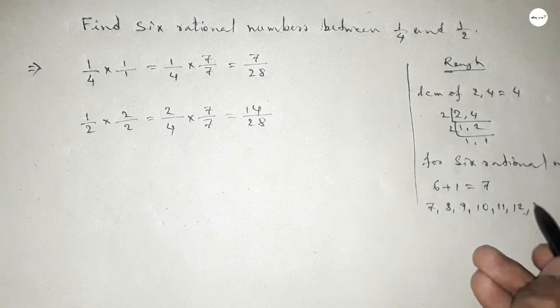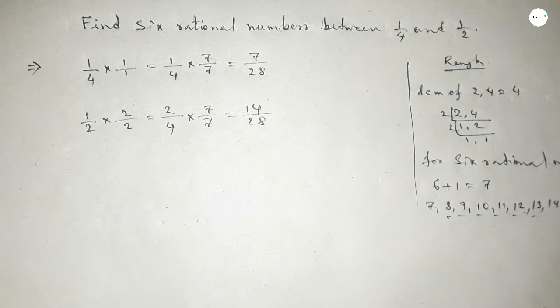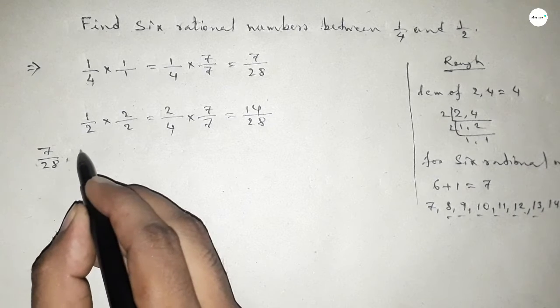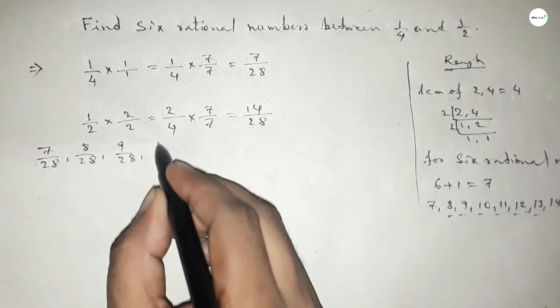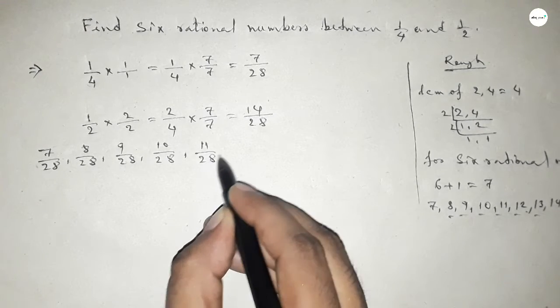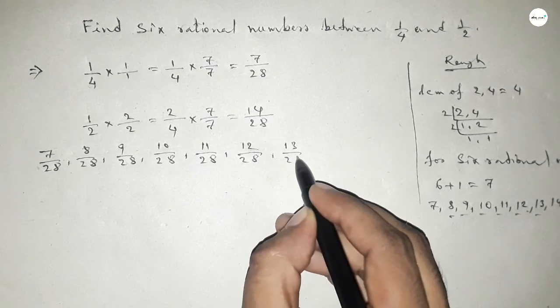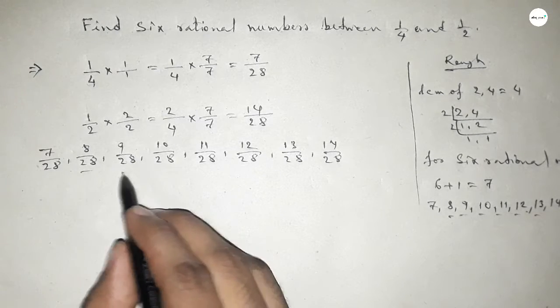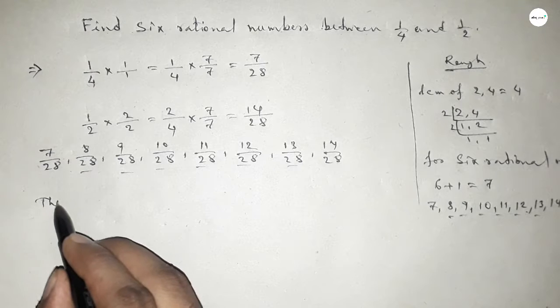Now between 7 to 14 we can get six natural numbers, and by these natural numbers we can form six rational numbers. So here all the rational numbers are 7 over 28, 8 over 28, 9 over 28, 10 over 28, 11 over 28, 12 over 28, 13 over 28, and last one 14 over 28.